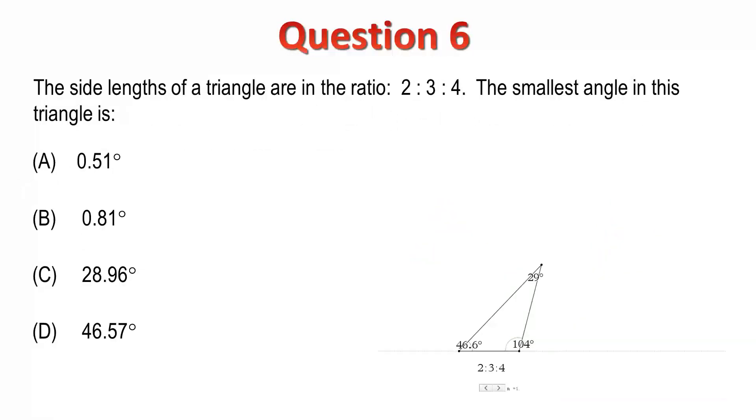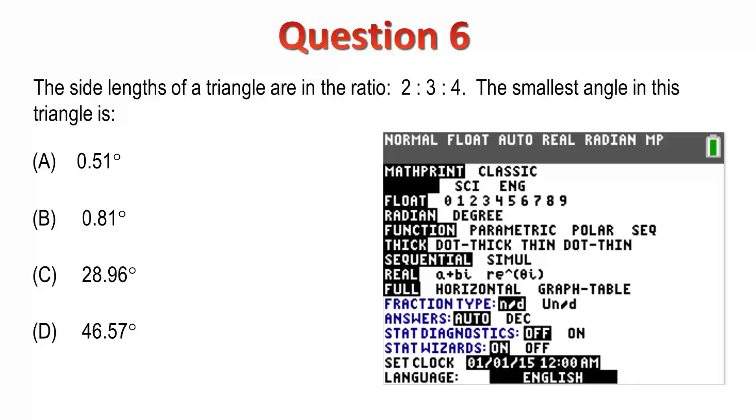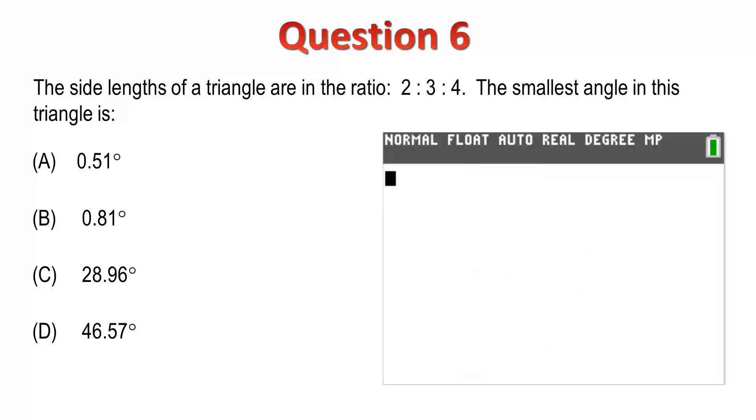Question 6. The side lengths of a triangle are in the ratio 2 to 3 to 4. We are required to find the smallest angle in this triangle. The first thing we need to know is that the angles in a triangle are invariant as the triangle is dilated. The second thing we need to know is that the smallest angle will be opposite the shortest side. It's also important to realize that all the answers provided are in degrees. So, before proceeding, it's a good idea to change the calculator mode into degrees.